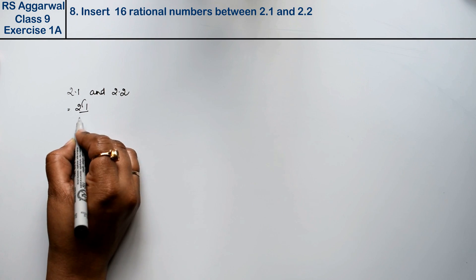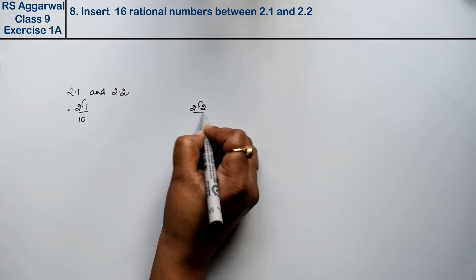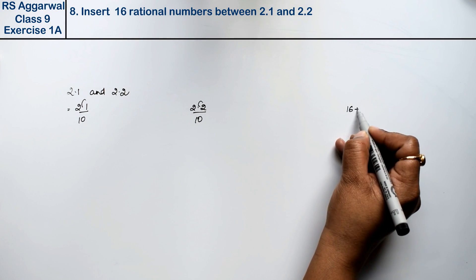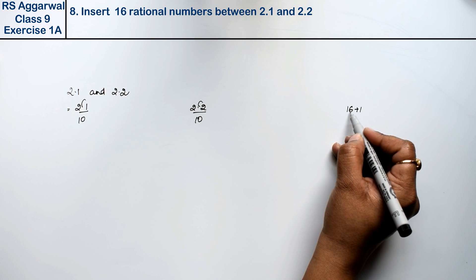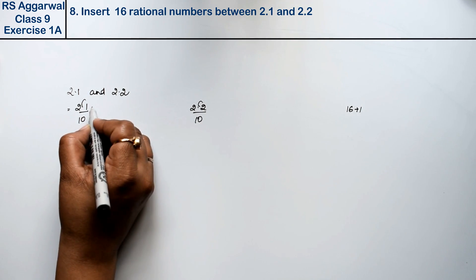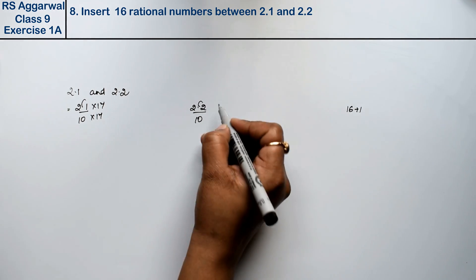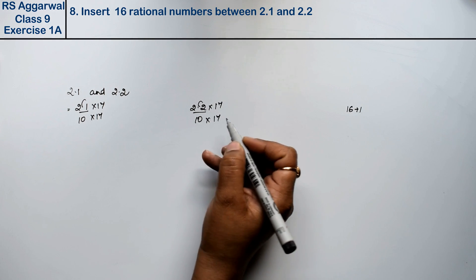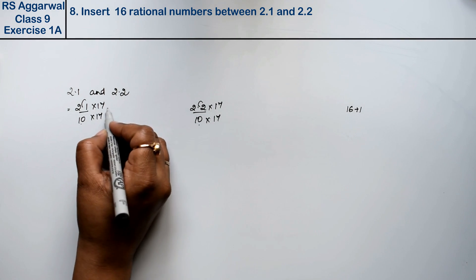Look at this 2.1. We'll express it as 21 by 10. In this way, 2.2 becomes 22 by 10. Now, we have to take 16 rational numbers. So, 16 plus 1 equals 17. We can also explain the method as in the previous method. We will multiply numerator and denominator by 17. Why do we do direct 17? Look, the denominators are the same, so we can do the same.